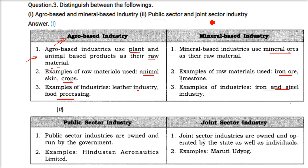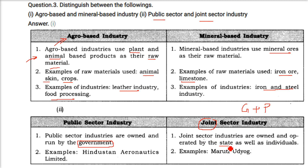Distinguish between public sector and joint sector industry. Public sector industries are owned and run by the government — the central or state government. Joint sector industries are owned and operated by the state as well as a group of private individuals. For example, HAL (Hindustan Aeronautics Limited) is a public sector industry, while Maruti Udyog is an example of a joint sector industry.